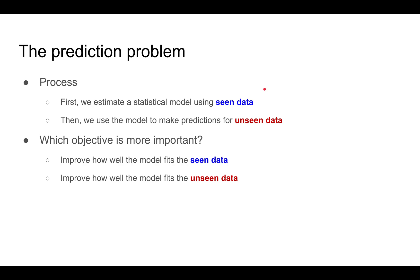So remember the prediction problem is where you estimate a statistical model using data that you have seen, and then you want to use the model to make hopefully accurate predictions for unseen data. Now, if you think about it, there are two possible objectives you might have.